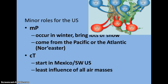Minor roles in the United States are the maritime polar air masses and the continental tropical air masses. The maritime polar occurs in the winter and brings lots of snow because of the moisture picked up over the oceans — coming from the Pacific or Atlantic — this is where we get the term cold, moist air from the northern Atlantic. The continental tropical, starting in Mexico or the southwest United States, has very little influence relative to the other air masses because it is much smaller in nature and gets pushed around by the maritime tropical and the continental polar.